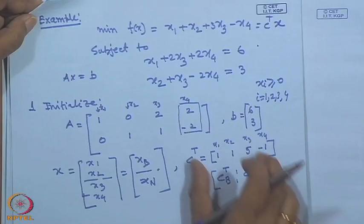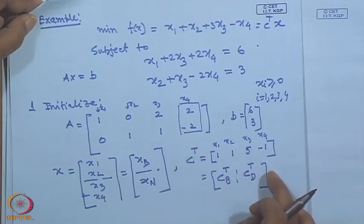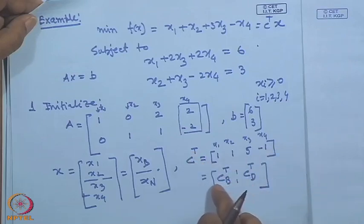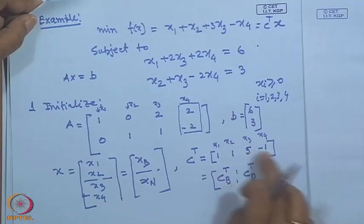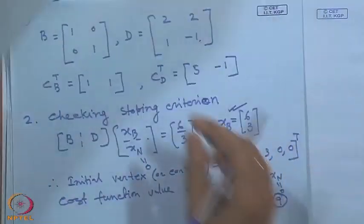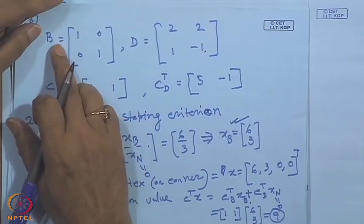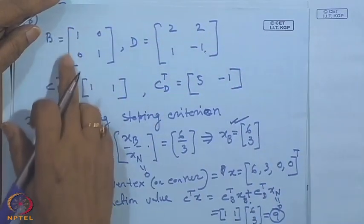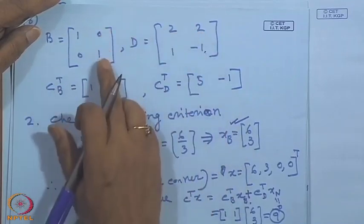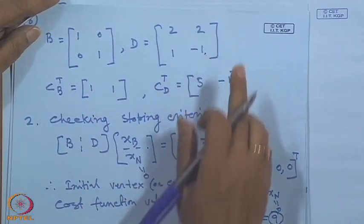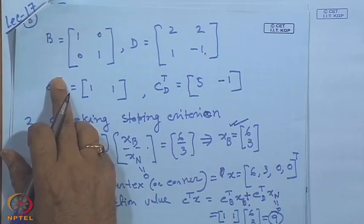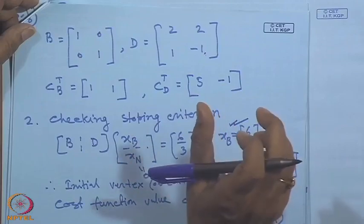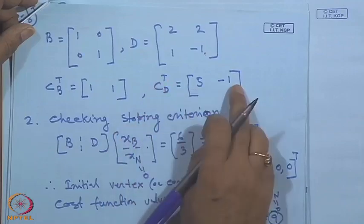Correspondingly, the objective function is written as C_transpose times x. From the expression, the coefficient of x1 is 1, x2 is 1, x3 is 5, and x4 is -1. We partition C_transpose into C_B_transpose (associated with basic variables x1, x2) and C_D_transpose (associated with non-basic variables x3, x4).